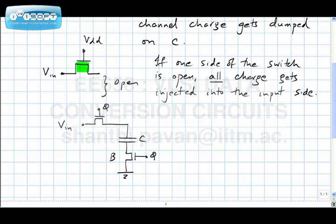We have already seen that the charge in switch A is signal-dependent. Can you comment on the charge in switch B? The charge in switch B is proportional to VGS minus VT. The VGS of switch B is simply VDD, so the charge in switch B is Cox × W × L × VDD. Therefore, the charge in switch A is signal-dependent, whereas the charge in switch B is signal-independent.